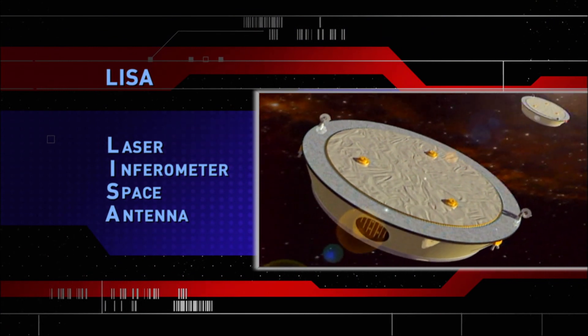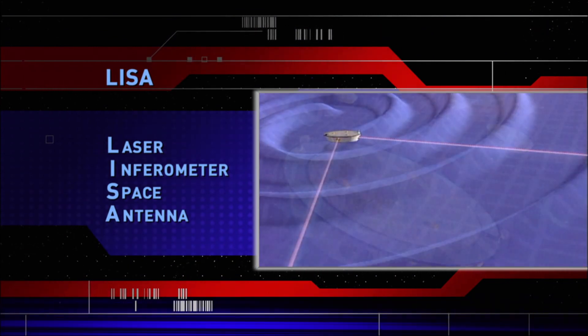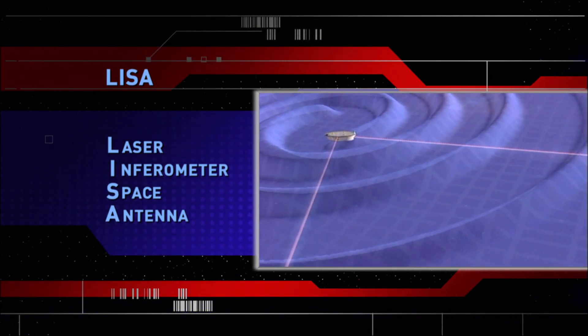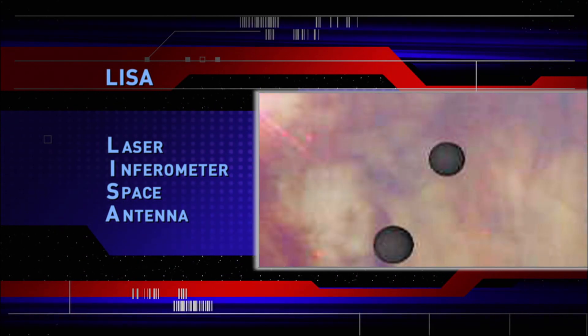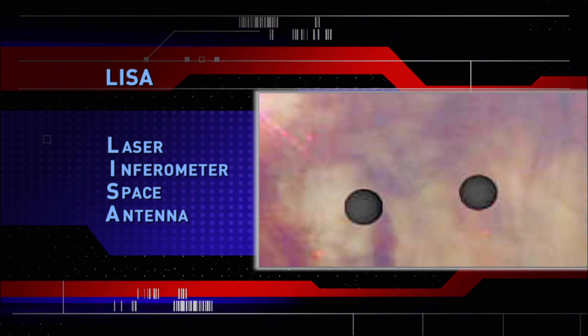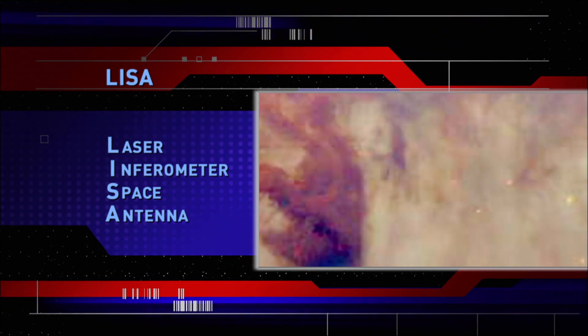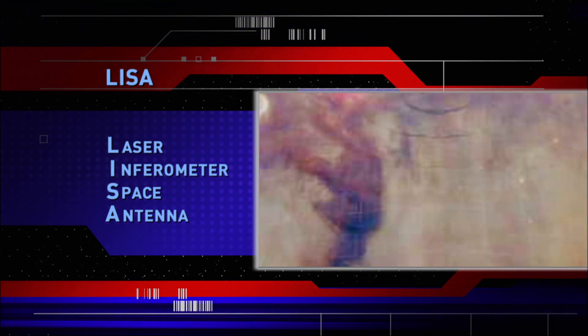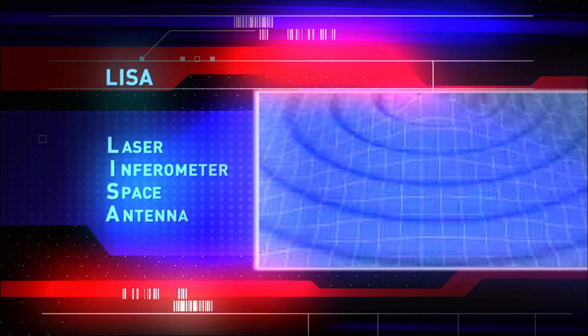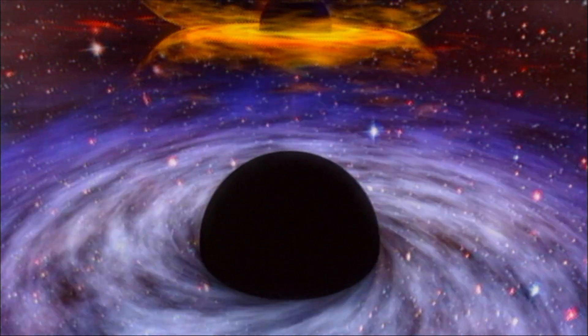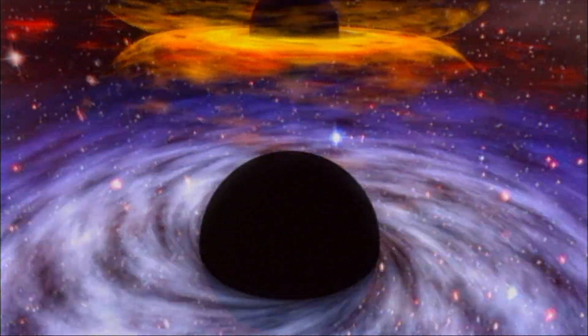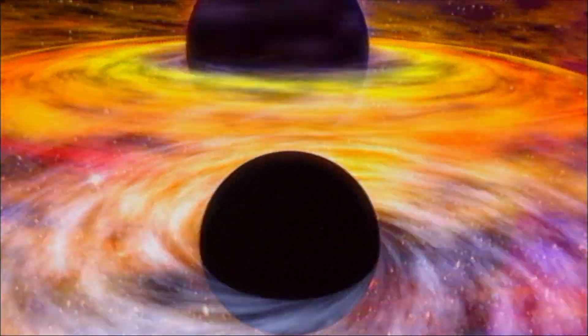In the future, LISA, a joint NASA and European Space Agency mission, will be able to detect waves from collisions involving supermassive black holes. These impacts occur after two galaxies have merged, and their supermassive black holes sink to the center of the newly formed galaxy, and find each other.